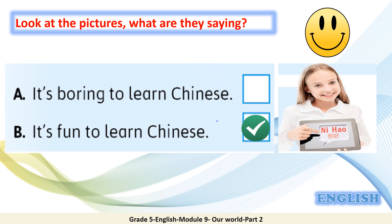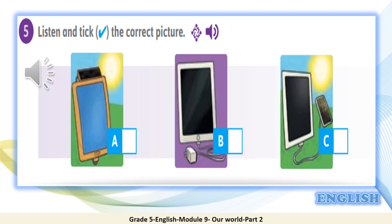Good job! Dear students, you are going to listen to a dialogue between two children and tick beside the correct picture according to what you hear. Let's go. Listen and tick the correct picture. 'This is for you, Bobby.' 'A present for me?' 'Yes, open it.' 'Wow! A new tablet! Thanks! You're the best sister.' 'You're welcome, I know you wanted it.'